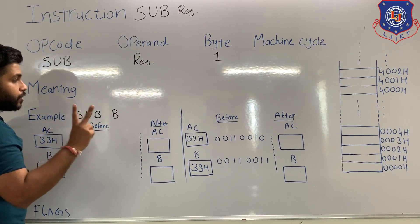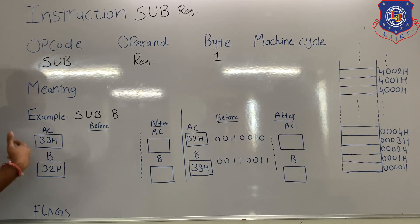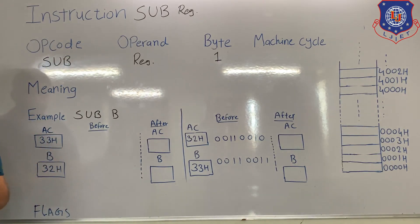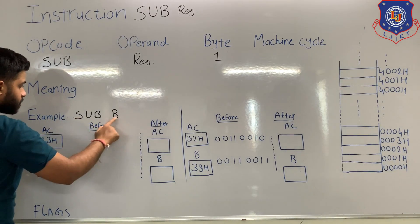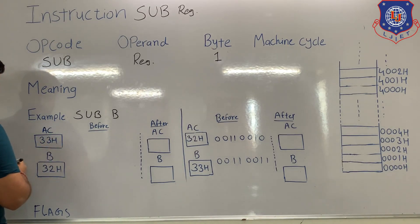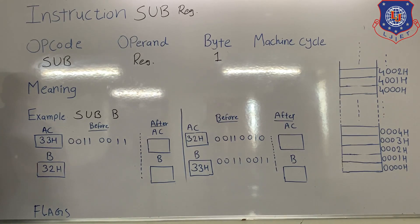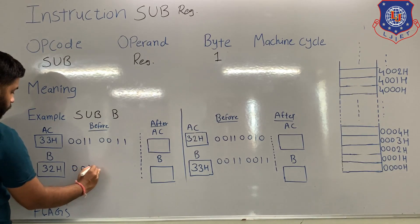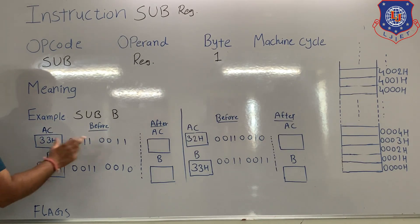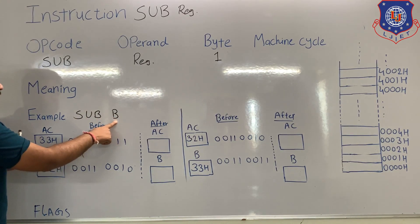For the subtract instruction, we will consider two cases. In the first case, the content of the accumulator is greater than the content of the register. In the second case, the content of the accumulator is smaller than the content of the register. For Case 1, before the execution, the content of accumulator is 33H, which in binary is 00110011. The content of register B is 32H, which in binary is 00110010. The instruction is SUB B — subtract the content of B from the accumulator and the answer will be stored in the accumulator.